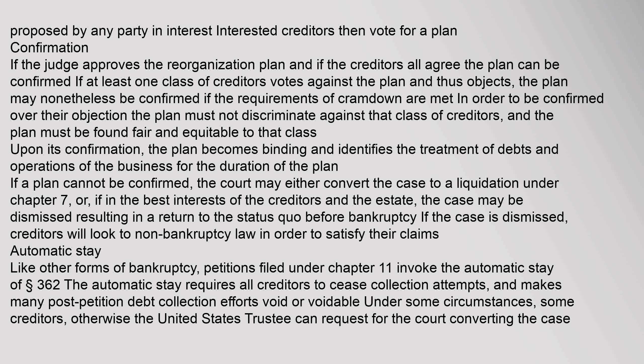Upon its confirmation, the plan becomes binding and identifies the treatment of debts and operations of the business for the duration of the plan. If a plan cannot be confirmed, the court may either convert the case to a liquidation under Chapter 7, or, if in the best interests of the creditors and the estate, the case may be dismissed resulting in a return to the status quo before bankruptcy. If the case is dismissed, creditors will look to non-bankruptcy law in order to satisfy their claims.